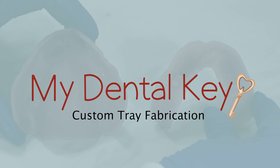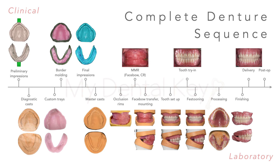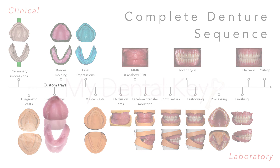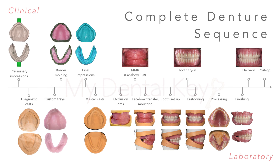This video will discuss the fabrication of custom trays. As seen in this illustration, the fabrication of custom trays is one of the many steps required to fabricate dentures. Custom impression trays are used to take the final impression from which the master casts are poured. Let's look at the process of creating custom trays.